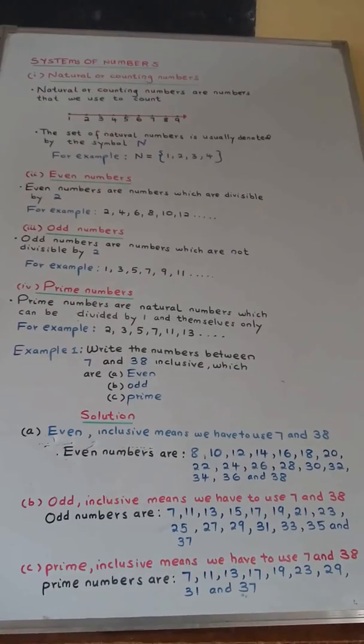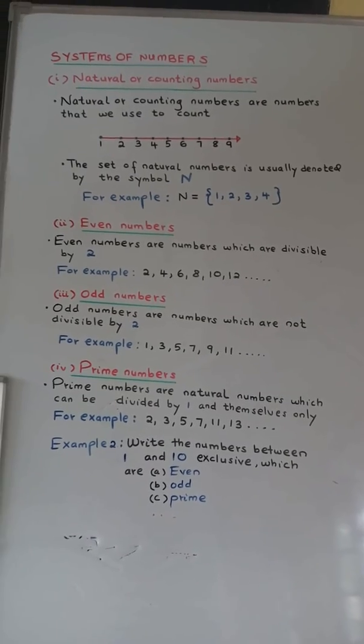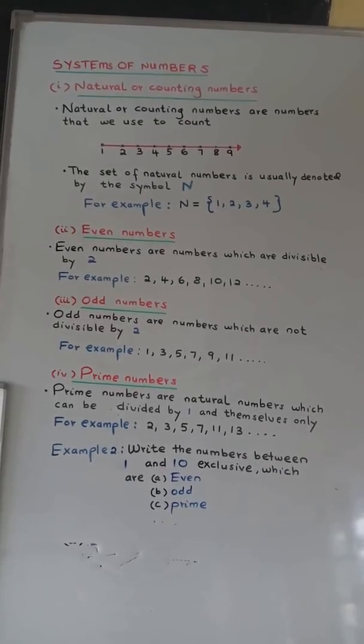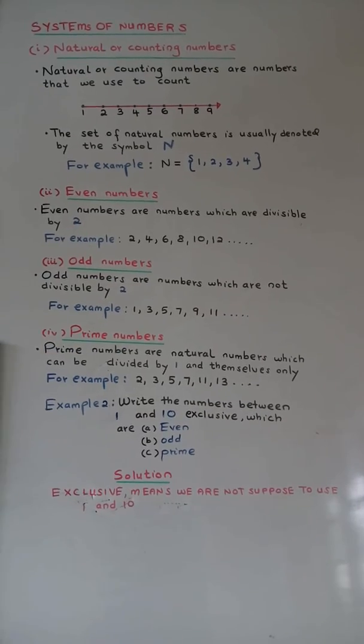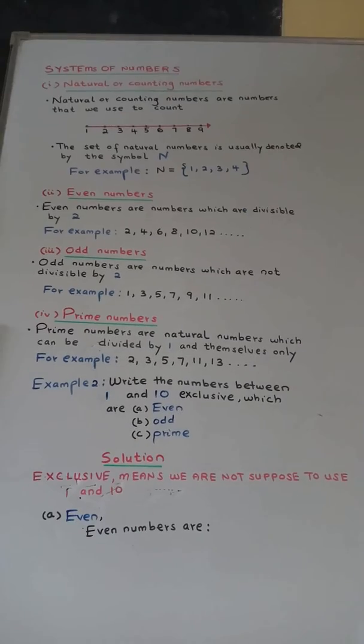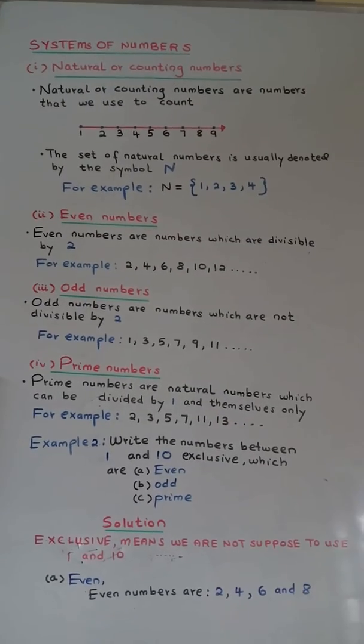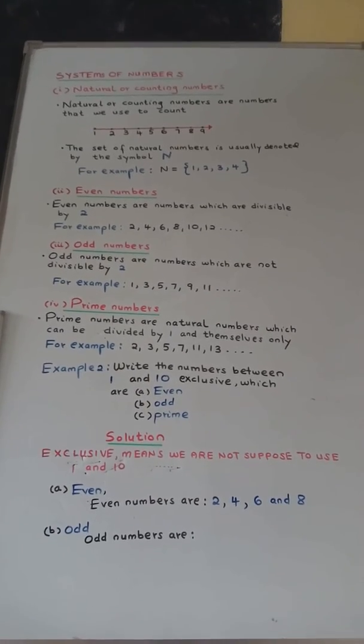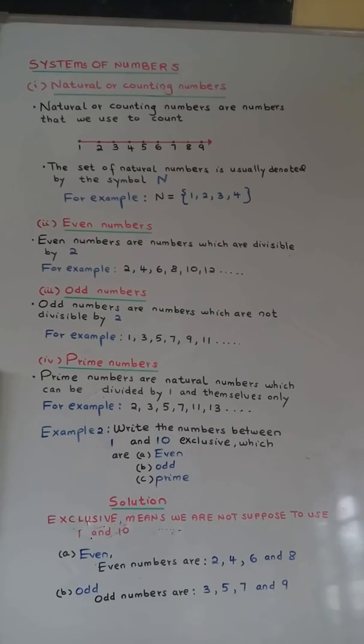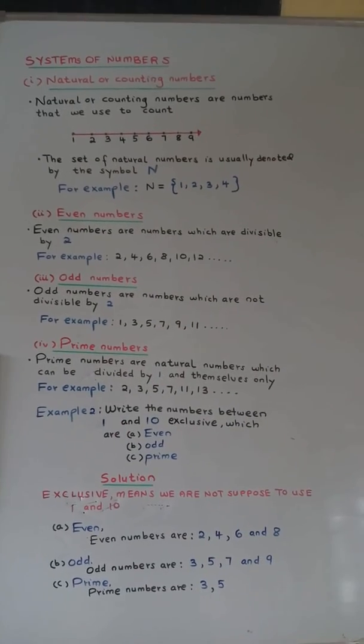Example number two. Write the numbers between 1 and 10 which are (a) even, (b) odd, (c) prime. Odd numbers are: 3, 5, 7, and 9. Prime numbers are: 3, 5, and 7.